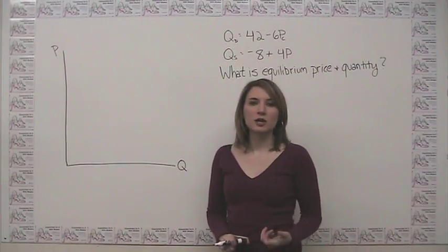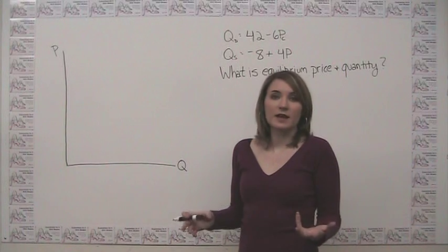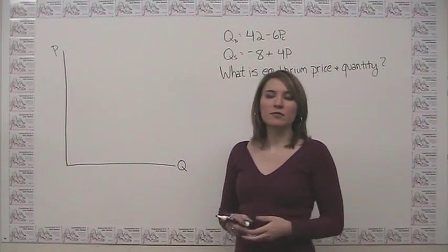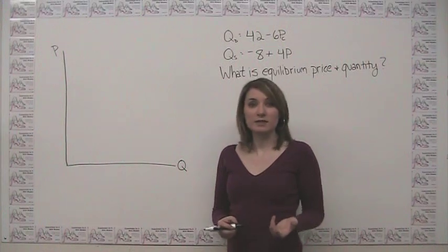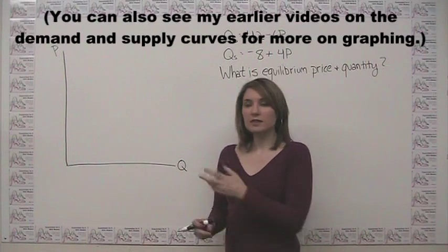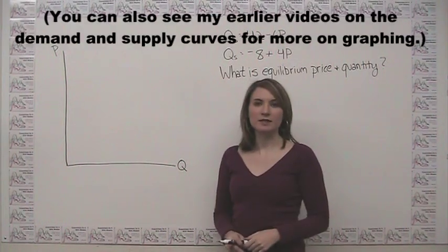So the first thing that we can do is draw a graph and say, what does this guy actually look like? And then we can go from there to make sure that when we do solve algebraically our answers are at least somewhat reasonable. So let's think about what this looks like on our supply and demand diagram.